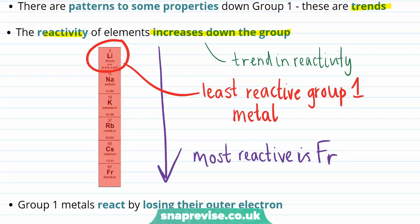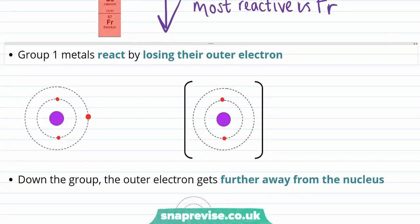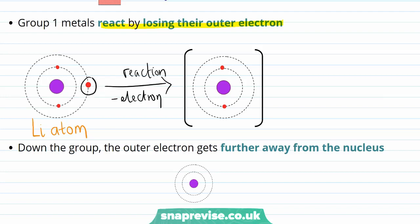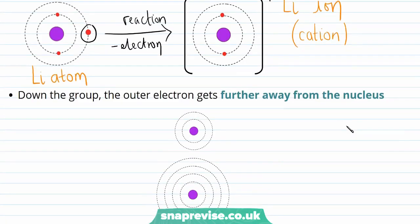First we should think about how Group 1 metals tend to react, which is that they react by losing their outermost electron. For example, the electronic structure of the lithium atom — which has three electrons and therefore three protons in the nucleus — will react by losing its outermost electron to form the Li⁺ lithium cation. Because this neutral lithium atom has lost one electron, which itself has a negative charge, the lithium ion has a positive charge. Cation is just the name for an ion with a positive charge, as we'll see in a later video.